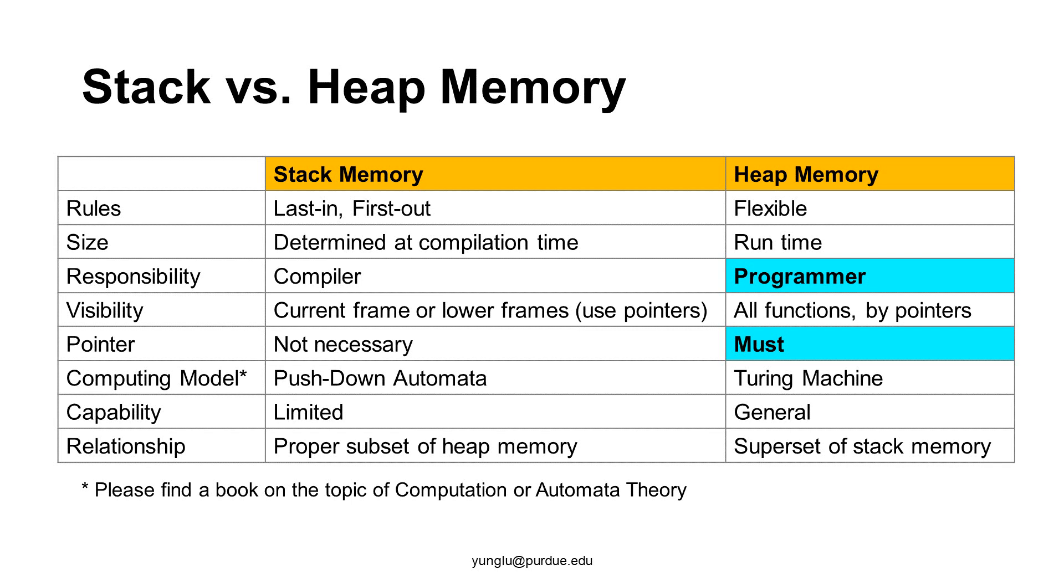Heap memory has no such restriction. Stack memory may store four types of things: return location, arguments, local variables, and value address. The size of stack memory needed for a frame is determined at compilation time based on the sizes of the variables. Heap memory has no such restriction. The size of memory can be determined when the program is running.